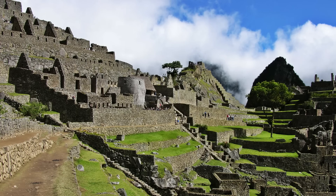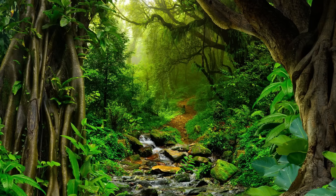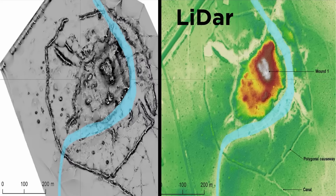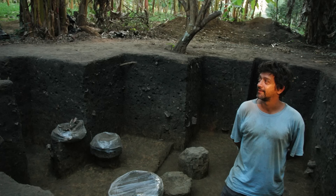Civilizations spread from this initial cradle as well, notably into the Amazon rainforest. It was once hypothesized that the poor soils of the Amazon couldn't support complexity on the scale of civilizations. Yet usage of LIDAR in parts of the Amazon rainforest has revealed many complex urban centers under the dense jungle. Amazonian archaeology is one of the frontiers of archaeological research.